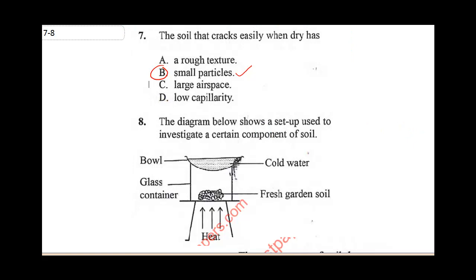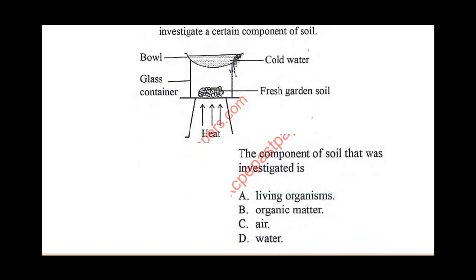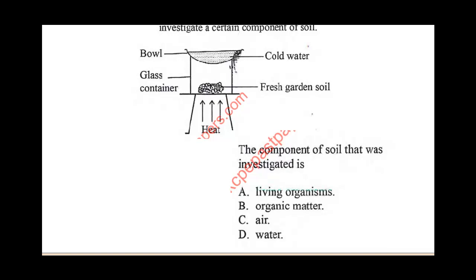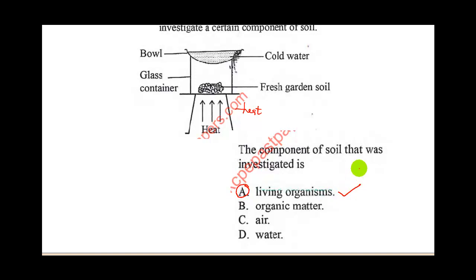Question eight says: the diagram below shows a setup used to investigate a certain component of soil. In the diagram there is cold water, a bowl, and a glass container with garden soil, and heat is applied to one side. When heat is applied, organisms in the soil — such as earthworms — will migrate away from the heat toward the cooler part. So the experiment investigates the living organisms living in the soil.